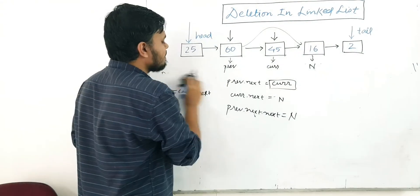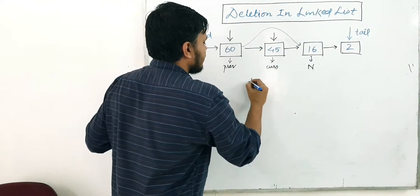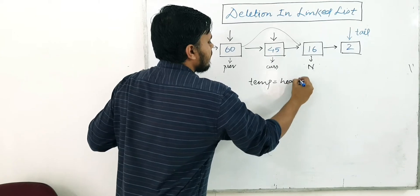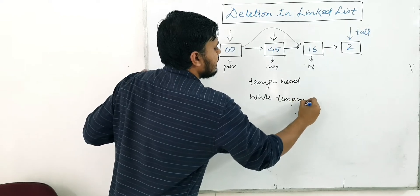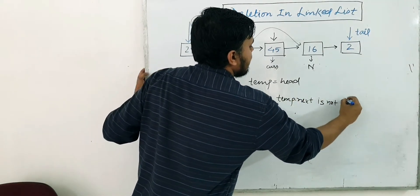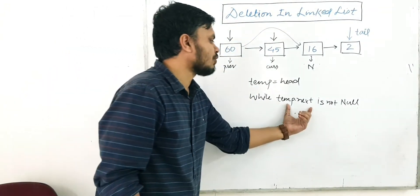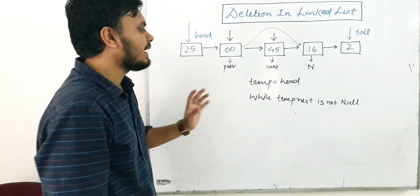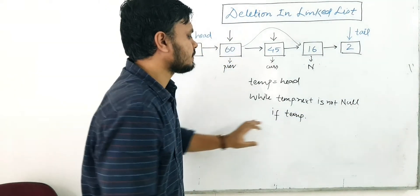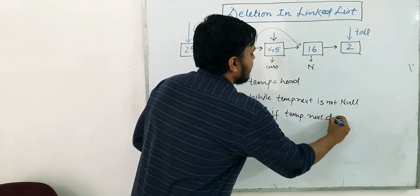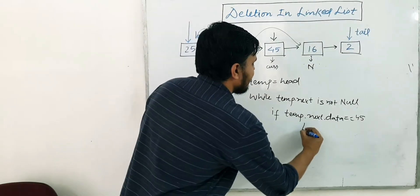Here's the pseudocode. We start with head, so temp equals head. Then we write a loop: while temp.next is not null. Inside the loop, we check if temp.next.data equals 45 — the item we're searching for. If so, we break out of the loop.